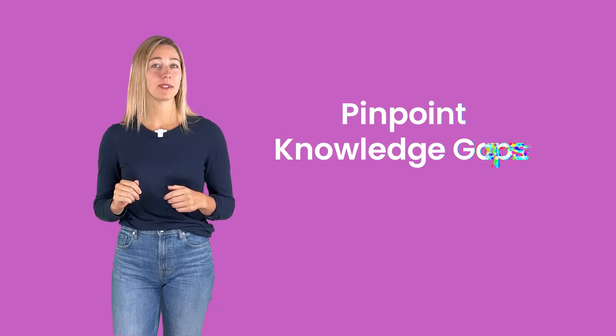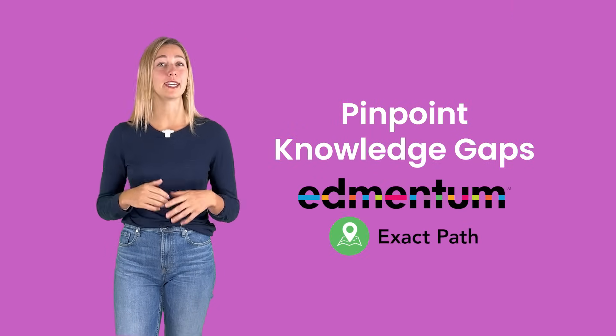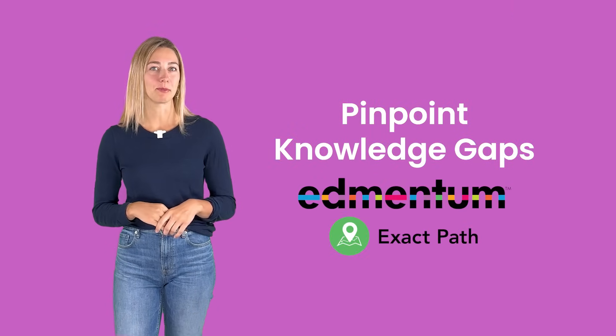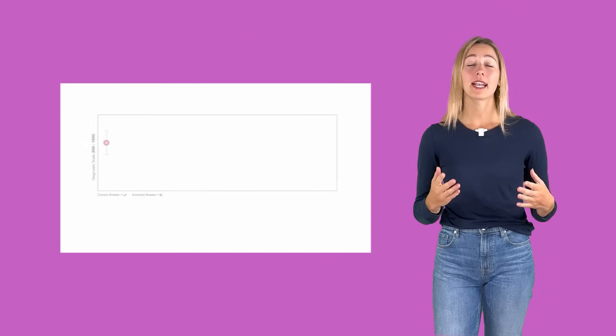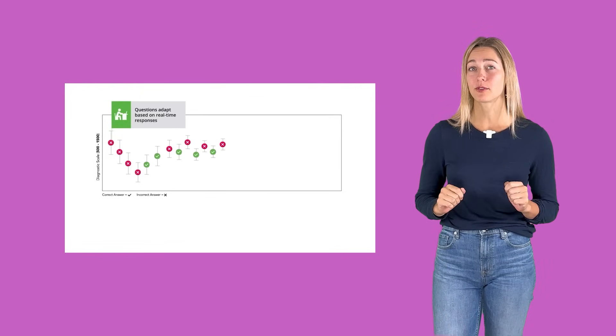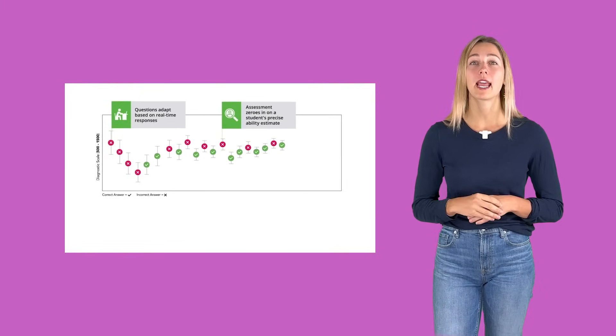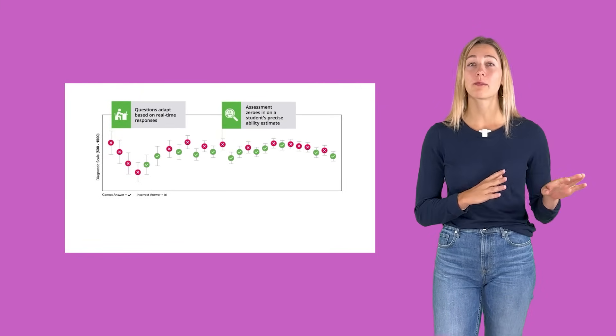Pinpoint knowledge gaps and identify areas where students may be struggling with an AI tool like ExactPath. ExactPath uses adaptive assessments to identify those struggle areas and then provide a personalized learning path to help students improve. You can use this tool to track student progress and adjust your own instruction as needed.